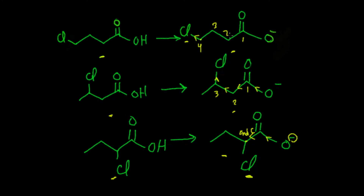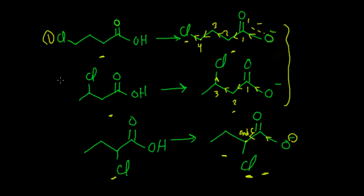In the other case the chlorine atom withdraws electrons along the sigma bonds, but it is farther from the negative charge. So the conjugate base where chlorine is closest to the charged oxygens is more stable than the others. The order of decreasing acidity is: the acid with chlorine on the terminal carbon is the strongest, then the second, then the least strong. This is the end of the tutorial — I hope you enjoyed the video and don't forget to subscribe.